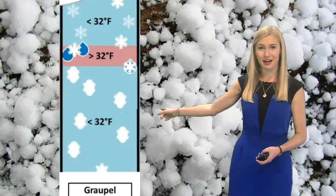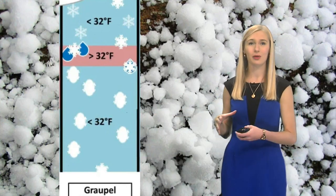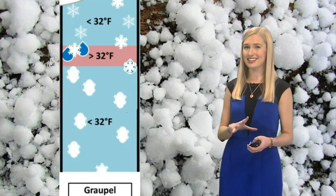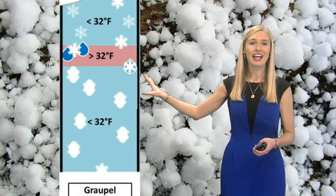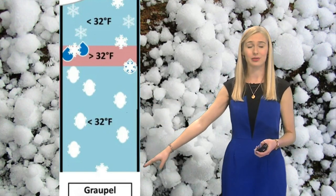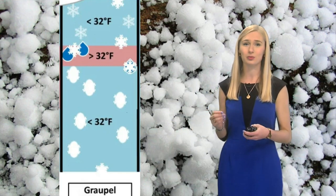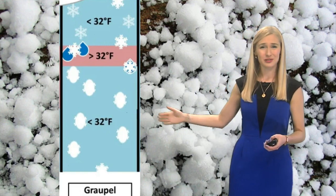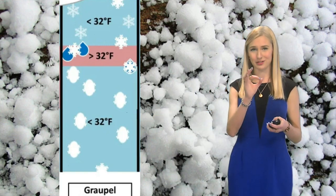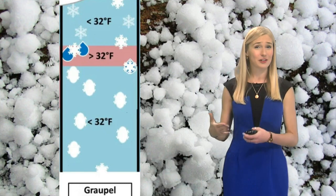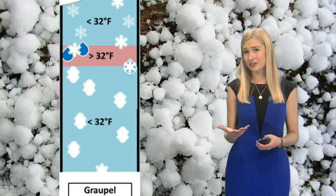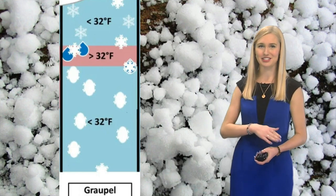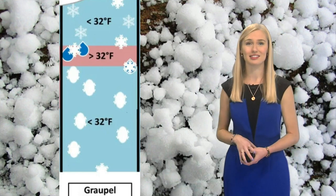This behind me is graupel. This is snow that passes through a warm layer of air, but it doesn't melt completely — that's key. The snow is only partially melted, and then as it continues falling through cold air, supercooled water droplets collect on the outer surface of the snow pellets. It usually creates these white, small, circle-shaped spheres. The surface temperature is usually about 45 degrees or cooler, and we have the potential to see either one of these types of precipitation today or tomorrow with the system moving in.